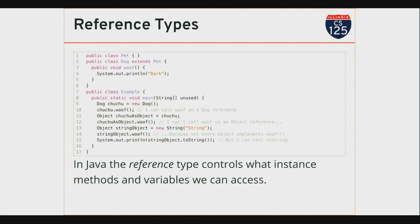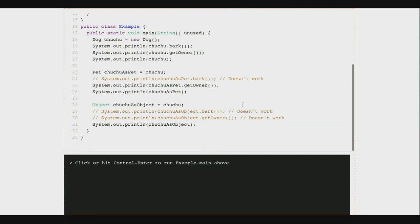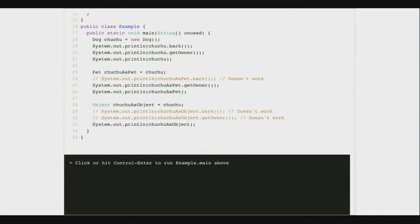So here's where this comes into play with polymorphism. In Java, the reference variable is what actually determines what type of instance variables and methods we can access. When I create a reference variable of a certain type, the type of the reference variable determines what methods I'm allowed to call. Let's see an example of this.